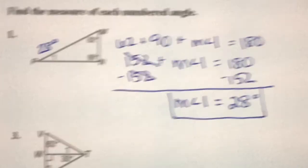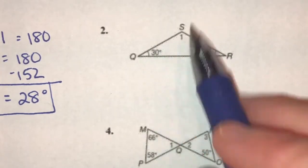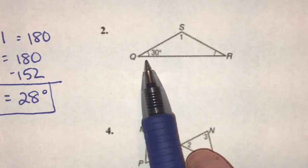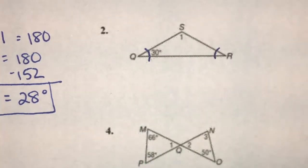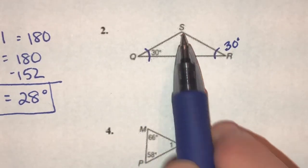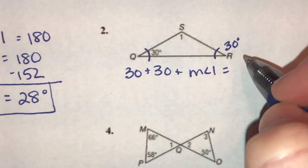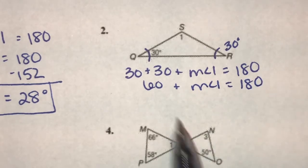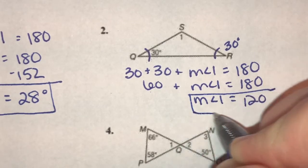Number two. We've got three angles here — 31 and an unknown. We don't know what this angle is; however, it's marked congruent to this 30 degree angle. That's what this little half circle is — this one has the same thing, so they are the same size. This is 30. So 30 plus 30 plus whatever this is has to add up to 180. Subtract 60 from both sides, so the measure of angle one has to be 120 degrees.